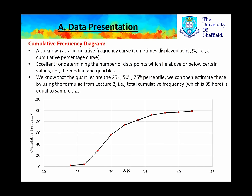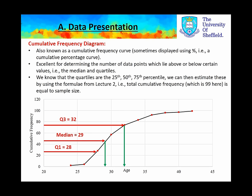We also learned about the cumulative frequency diagram, which is also known as a cumulative frequency curve, sometimes displayed using percentage, as it will be today in the practical. It's excellent for determining the number of data points which lie above or below certain values, for example the median and the quartiles. Using the formula from Lecture 2 for total cumulative frequency — which is 99 here — we can work out that the median is 29, Q3 is 32, and Q1 is 28, based on its position in the data set.